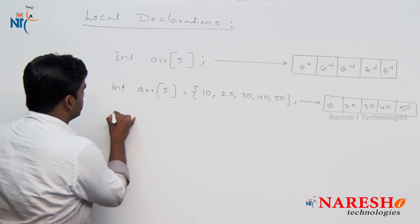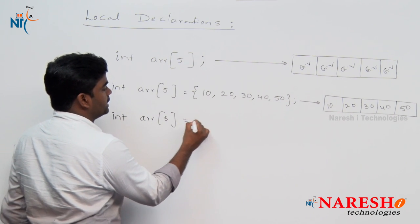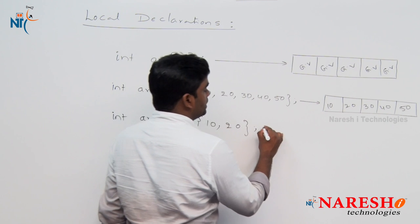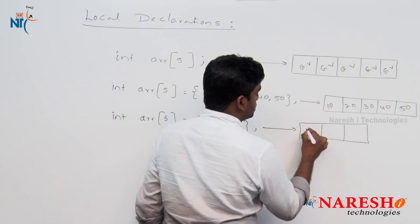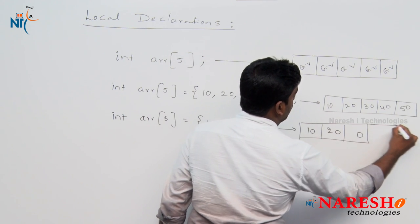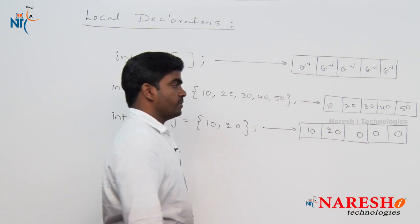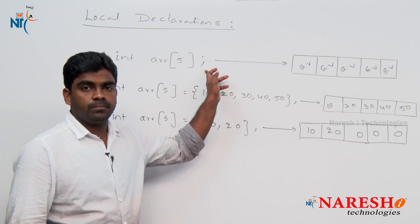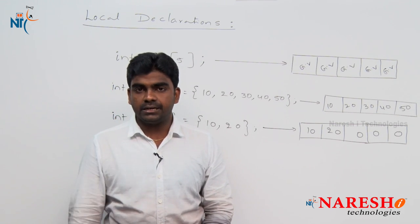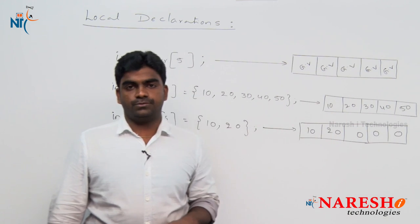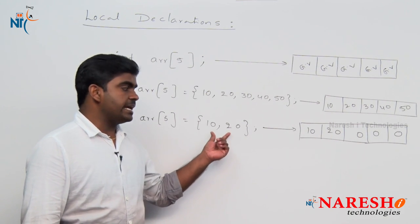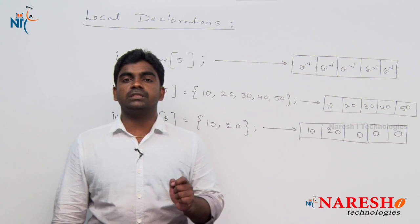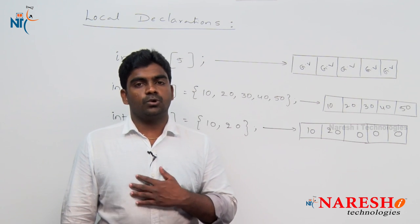If you declare an array but initialize only two values — say 10 and 20 — what about the remaining values? The remaining elements are initialized with zeros. The difference is important: in the first declaration with no initialization, all elements get garbage values. But if you assign even just two elements, the remaining three locations are initialized with zeros.